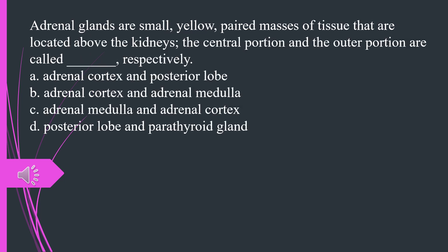Adrenal glands are small, yellow, paired masses of tissue that are located above the kidneys. The central portion and the outer portion are called what, respectively. A. Adrenal cortex and posterior lobe B. Adrenal cortex and adrenal medulla C. Adrenal medulla and adrenal cortex D. Posterior lobe and parathyroid gland. The answer is C, adrenal medulla and adrenal cortex.